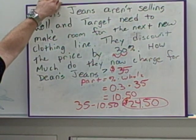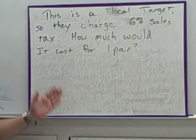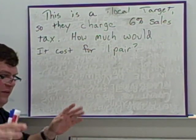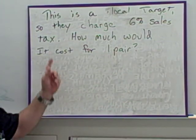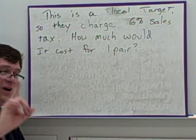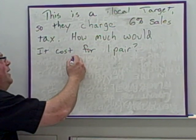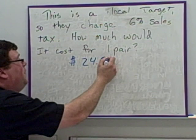Now let's take this one step further. This is a local Target store, so they charge 6% sales tax. Yeah, I know Hammock Landing is 7%, forget that. It's a 6% sales tax. How much would it cost for one pair of jeans?